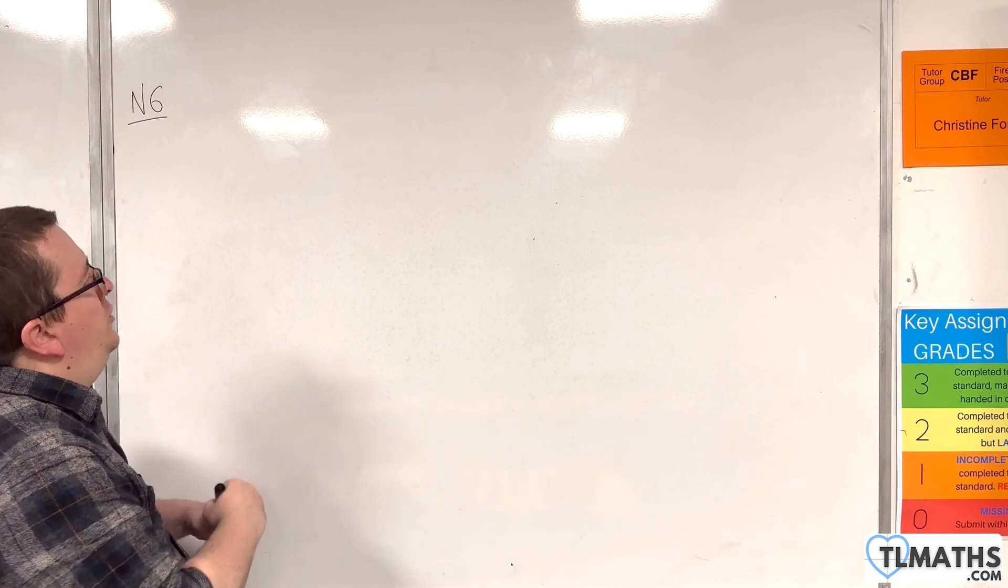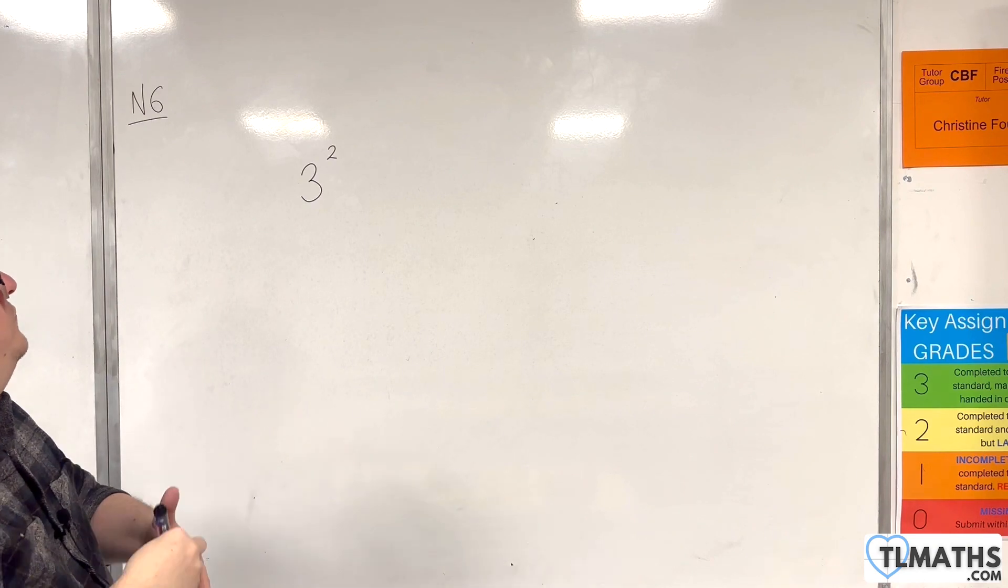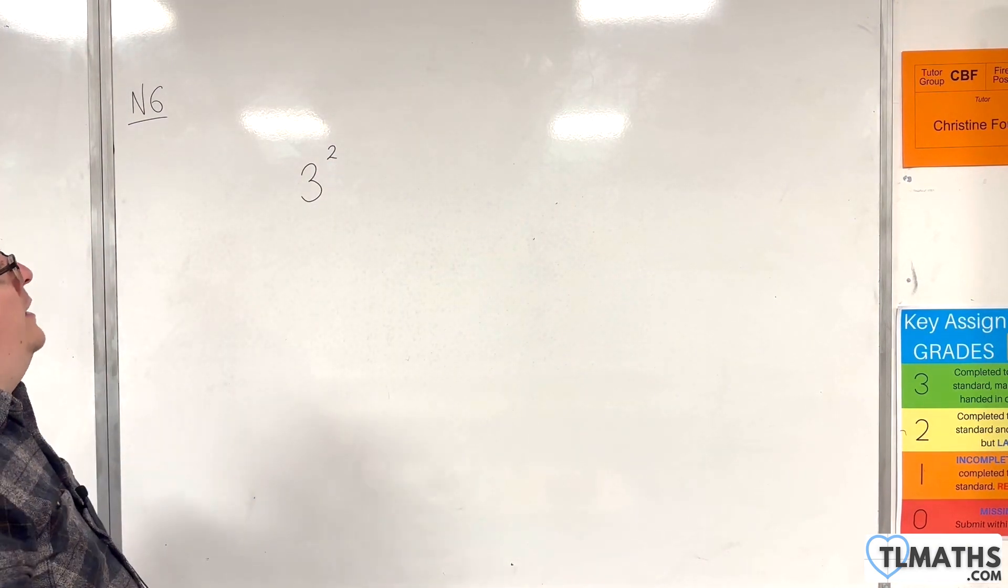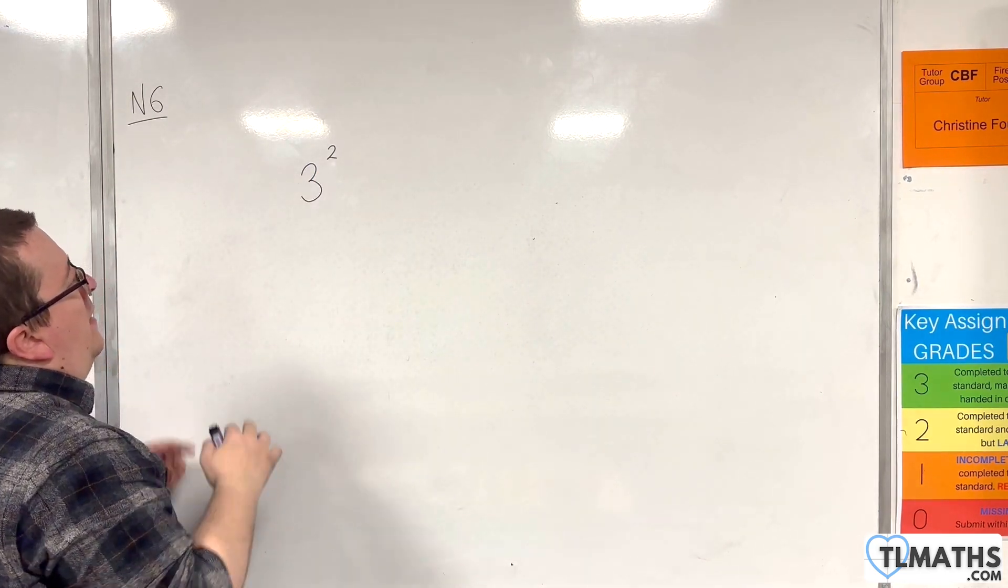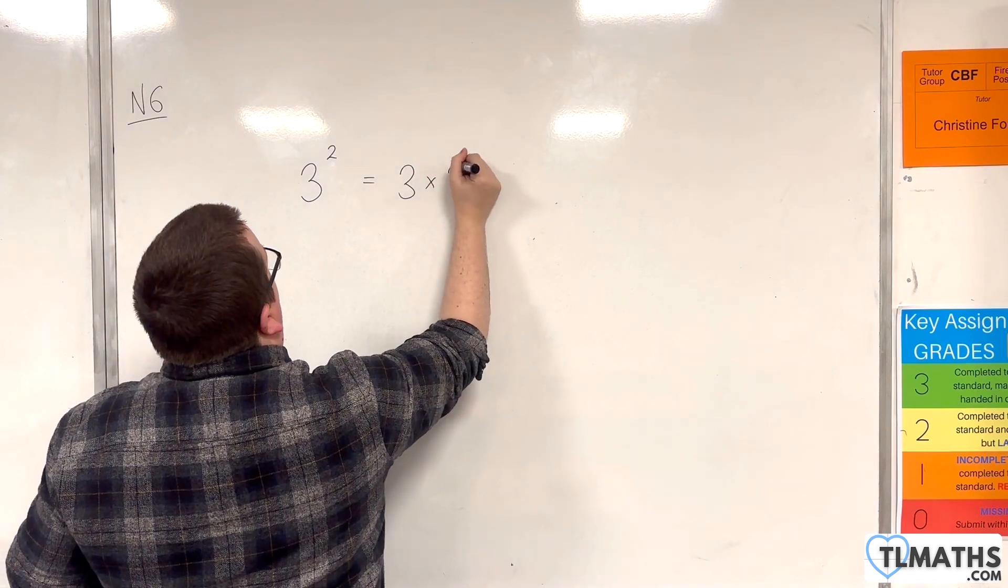I'm going to choose 3 squared. So we write this 2 up here as a superscript. It's to the right of the 3, it's above it, and that represents 3 times 3.